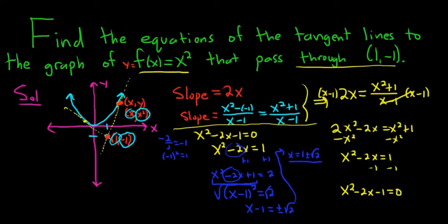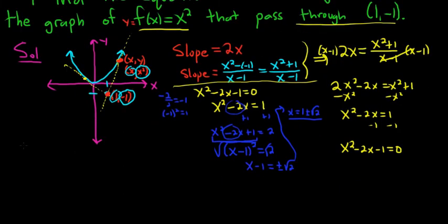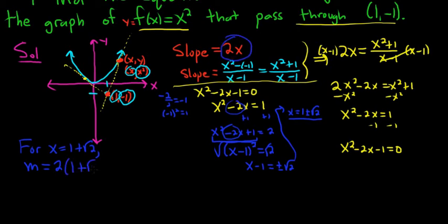So these are our x values. Now that we have our x values, we can plug them into the slope to get our two distinct slopes, because we have two tangent lines. For x equals 1 plus the square root of 2, m, which is our slope, is 2x — so it's 2 times 1 plus the square root of 2. That'll be our slope: 2 plus 2 square root of 2. So we have our x, we have our slope m, we just need our y value.